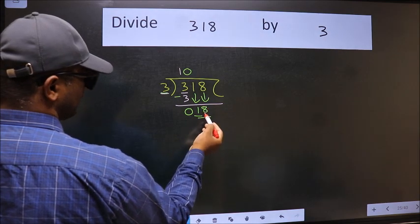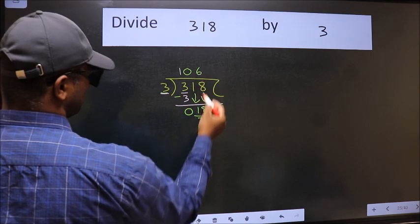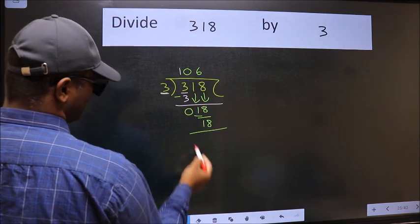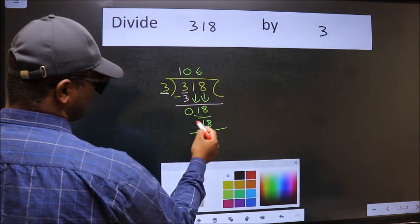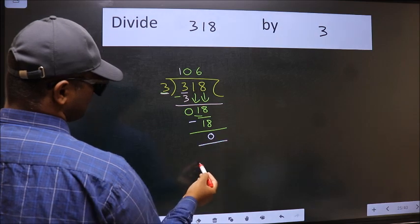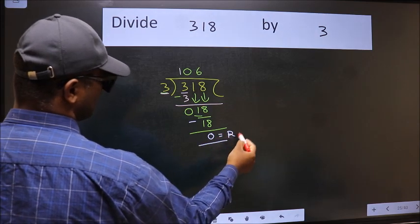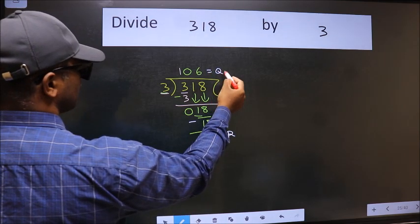Now 18. When do we get 18 in 3 table? 3, 6, 18. Now we should subtract. We get 0. So this is our remainder and this is our quotient.